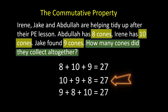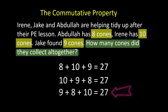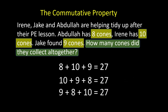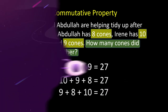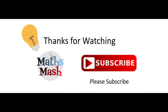The commutative property also says you can mix those addends up. So 10 plus 9 plus 8 will also give you 27, and 9 plus 8 plus 10 will also give you 27. I hope you found that helpful — good luck and don't forget to subscribe.